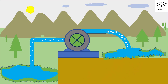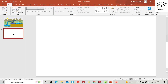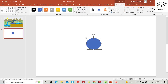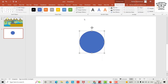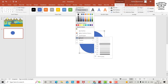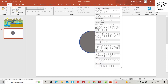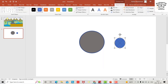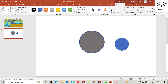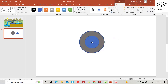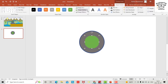New slide. First bring a circle, make it seven centimeters — width is also seven. Shape outline, you can change shape fill. Insert another shape, bring this type, make it four by four. Center it, shape fill, shape outline.